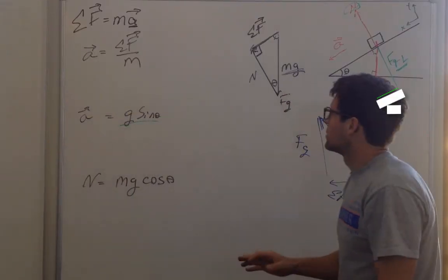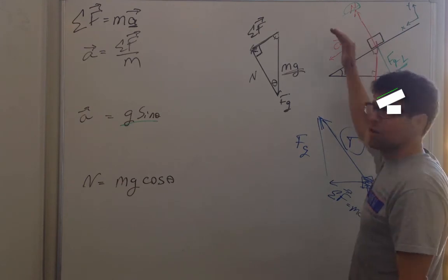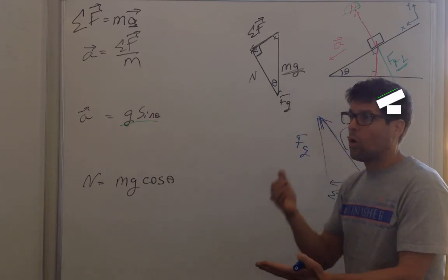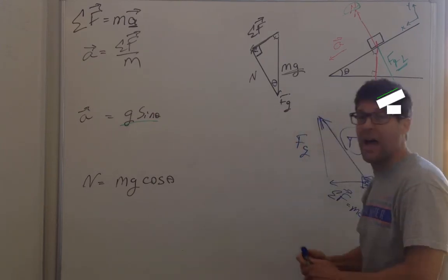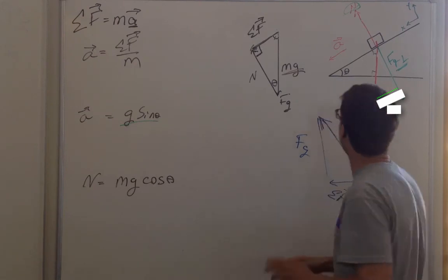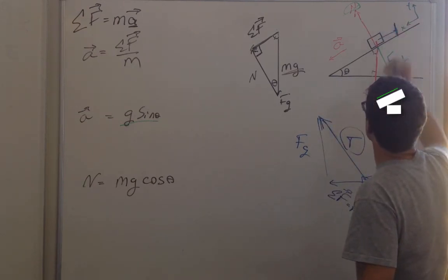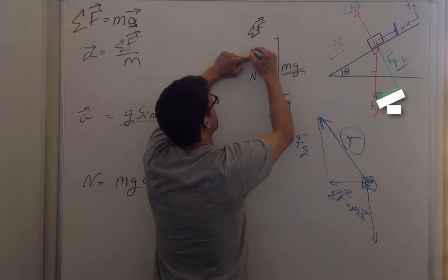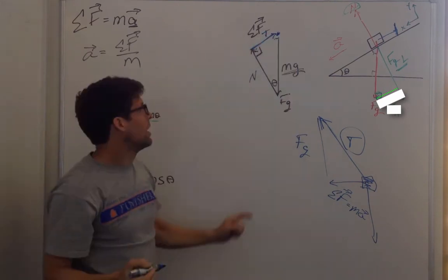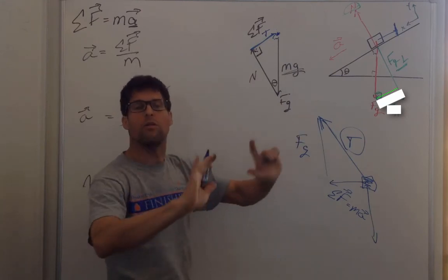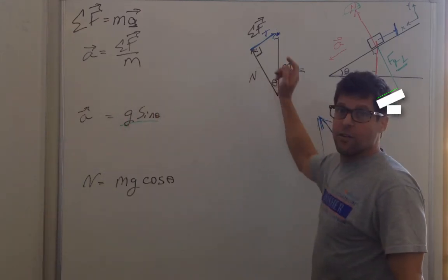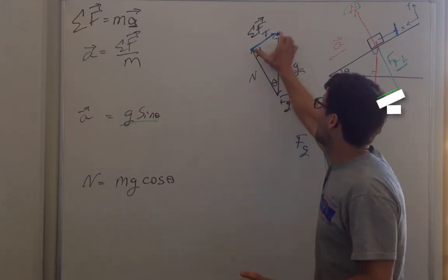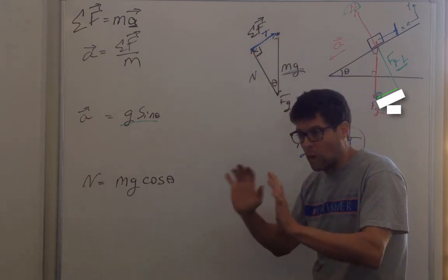So what do we take away from this? Make sure you identify your forces correctly. Ask yourself that important question: are we accelerating? If so, what is the direction of the acceleration? If not, the sum of the forces is zero — equilibrium. For example, if a string were tied to the object, gravity plus normal force plus tension could sum to zero. Once you've identified the direction of acceleration and added the forces correctly, it's just a geometry problem.